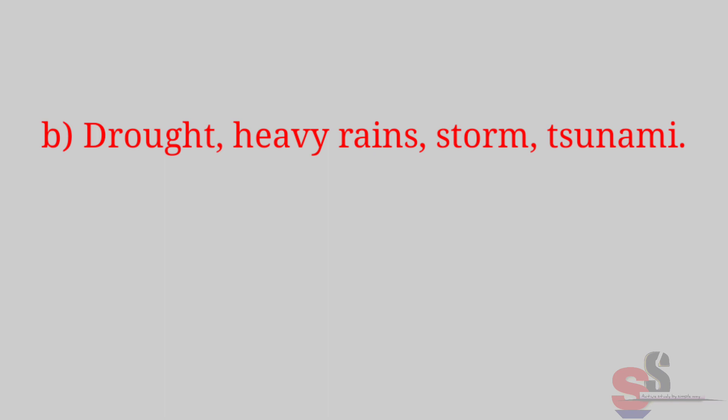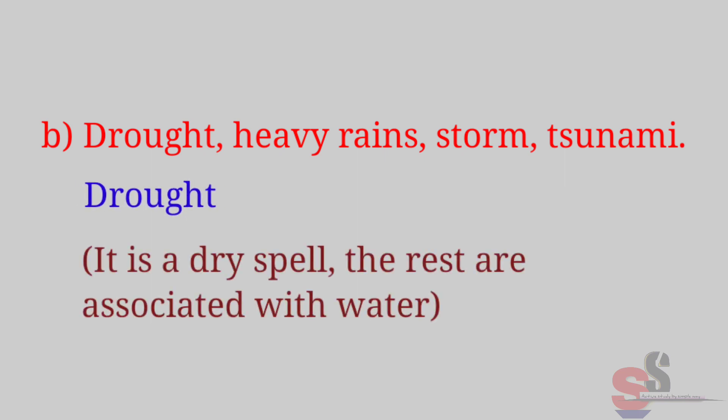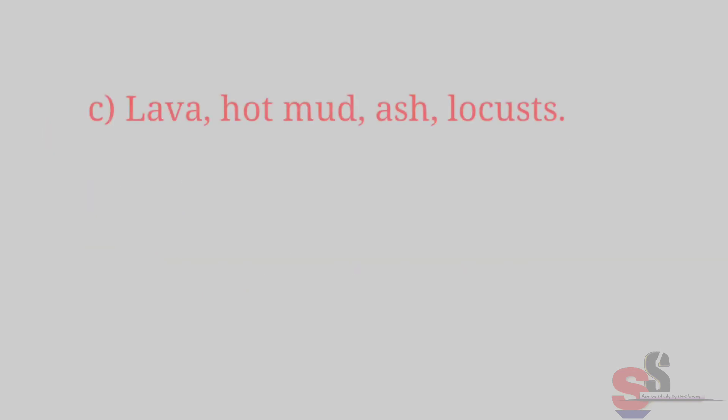B. Drought, heavy rains, storm, tsunami. The odd man out is drought, because it is a dry spell. The rest are associated with water.